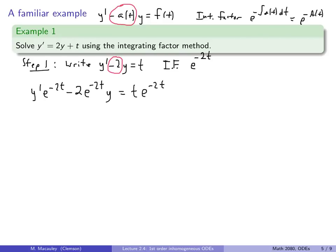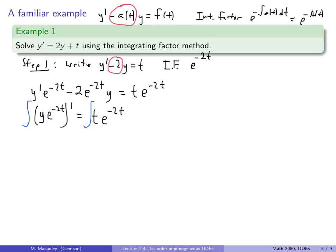Notice why the integrating factor works — this thing always collapses to [y · e^(−2t)]'. Let's check: the derivative of y·e^(−2t) by the product rule is y'·e^(−2t) plus y times the derivative of e^(−2t), which gives that −2·e^(−2t) term. So the left-hand side reduces to [y·e^(−2t)]' = t·e^(−2t). Now we integrate both sides.